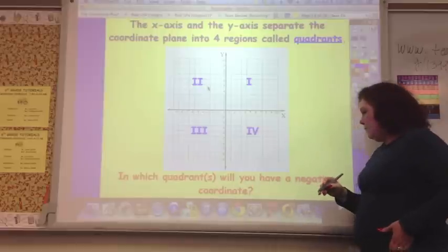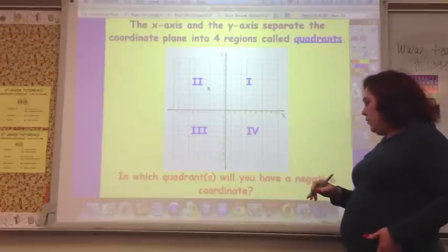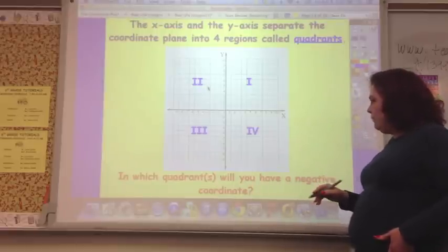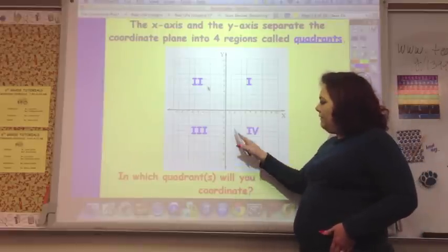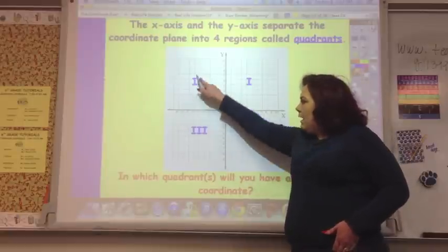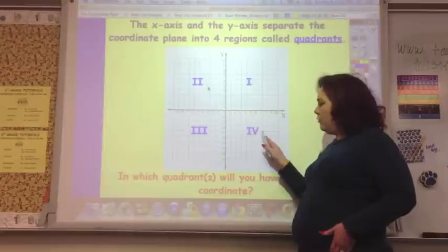It's counter-clockwise. You always label it one, two, three, four. In which quadrants will you have a negative coordinate? Well, you're going to have it in quadrant three, and in quadrant two, and in quadrant four.